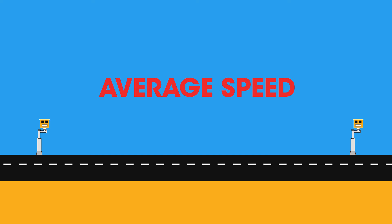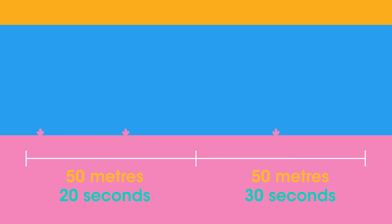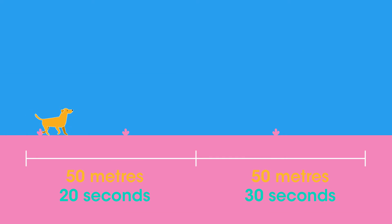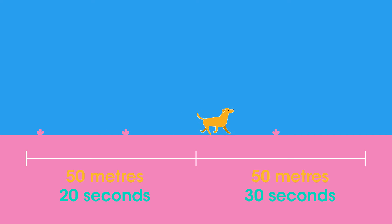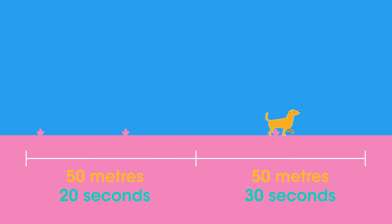Let's look at an example. A dog is running across a field — she runs the first 50 meters in 20 seconds, but then gets tired and runs the last 50 meters in 30 seconds.